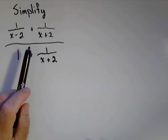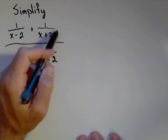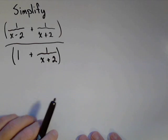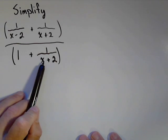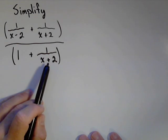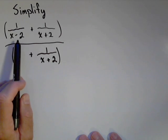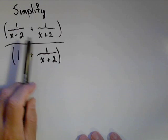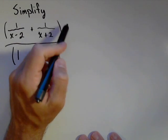One good way of approaching this is to right away find the least common denominator of those fractions on top and bottom. On bottom, the least common denominator is just x plus 2. On top, it's x minus 2 times x plus 2. So the least common denominator of both is x minus 2 times x plus 2.